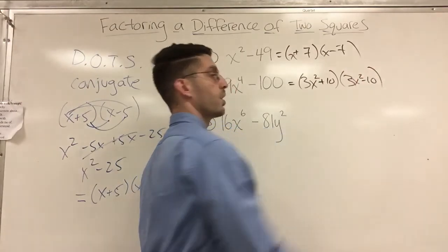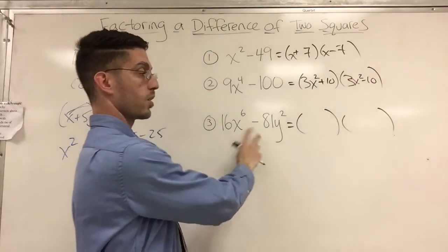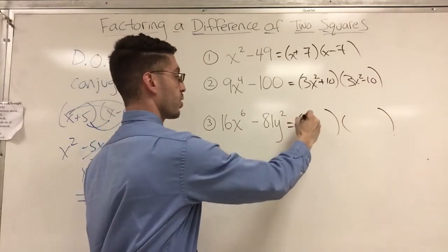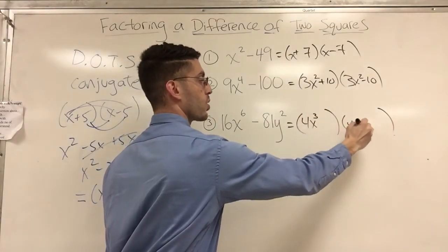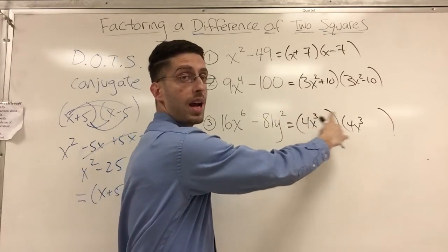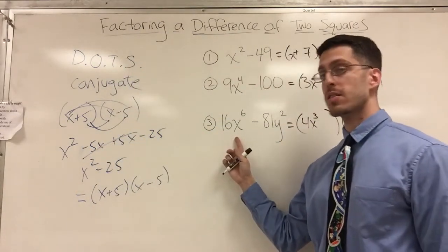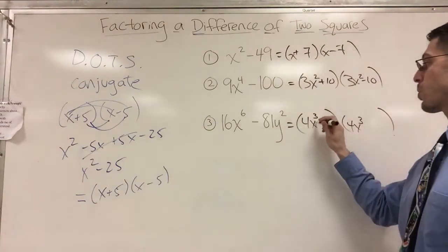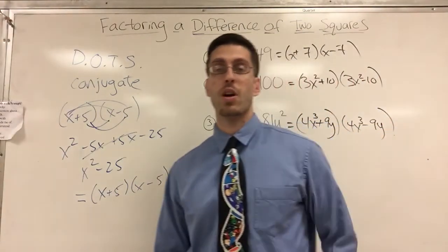And finally, this is a little trickier - it takes more thinking but it's not harder. How do I get 16x to the sixth? 4x to the third gives me 16x to the sixth because I multiply the coefficients but I add the exponents. So that gives me my 16x to the sixth. And how do I get the 81y squared? Square root of 81 is nine, so I got a 9y here minus a 9y there. And those are your answers.